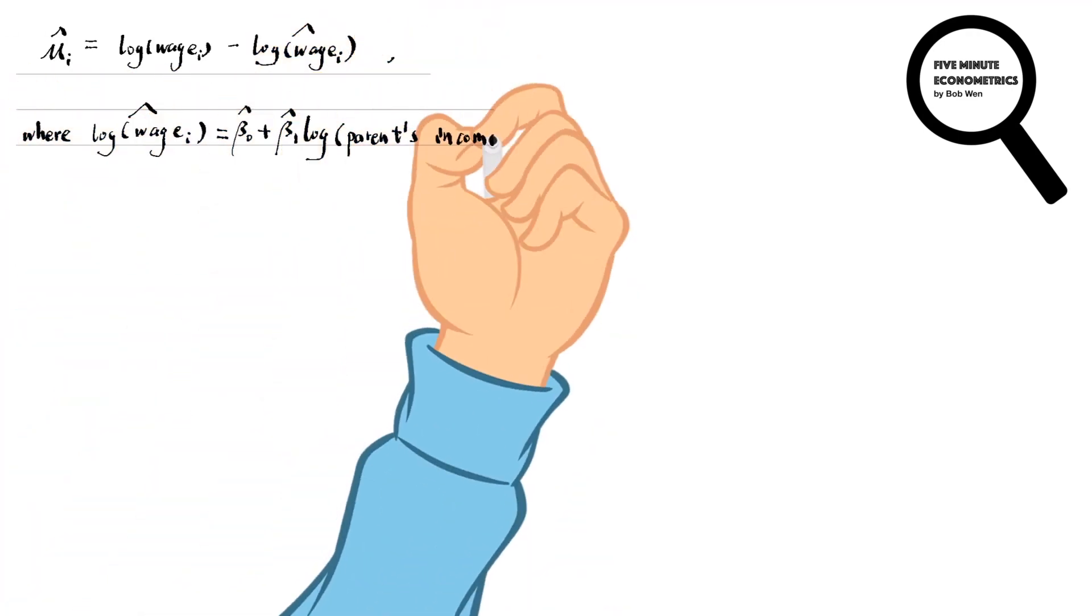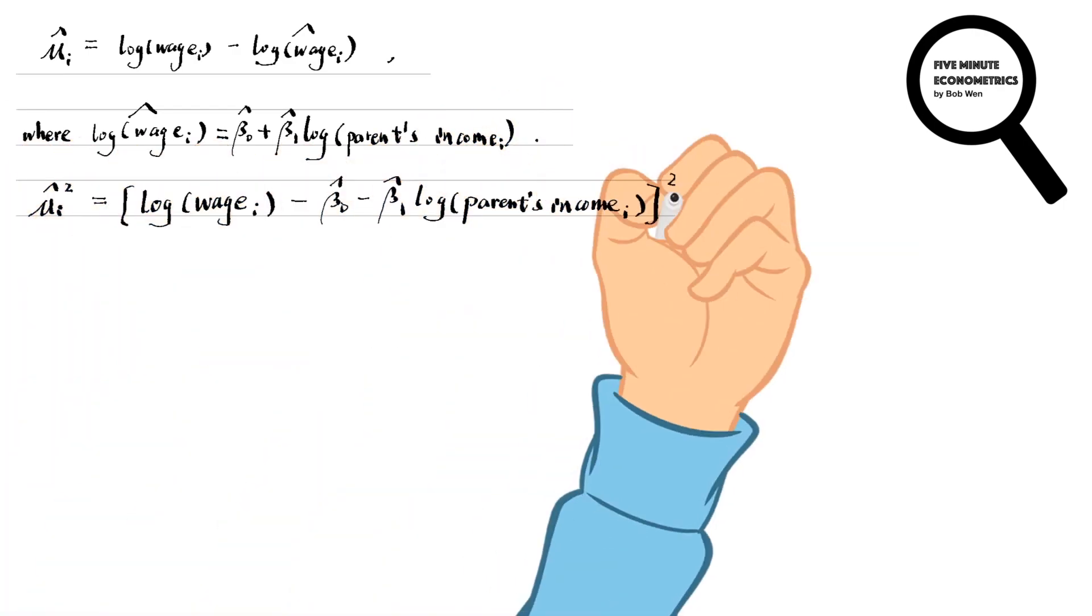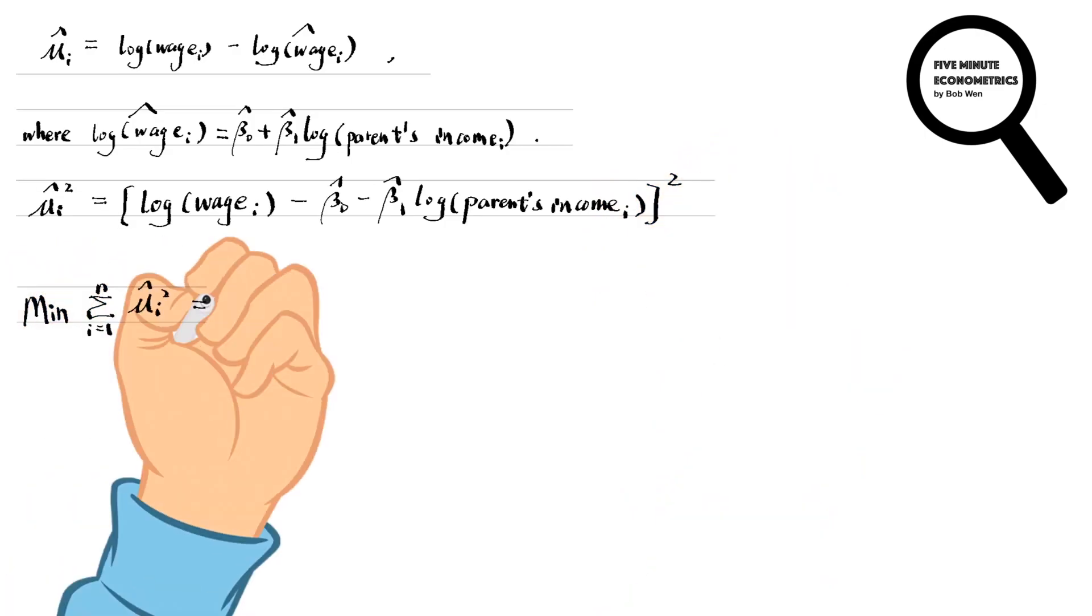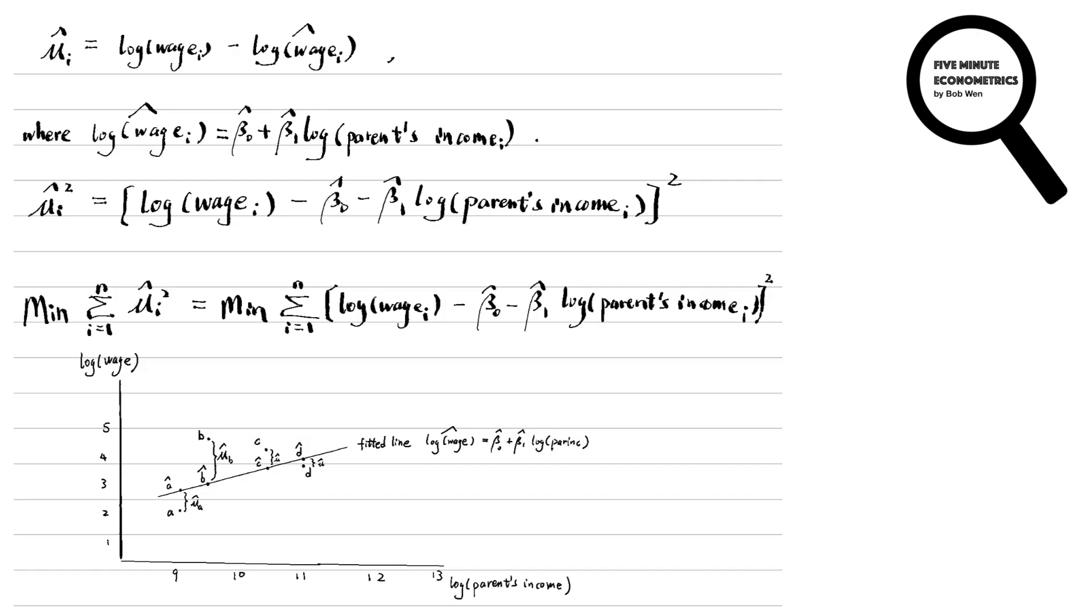The ordinary least squares OLS method of estimating the coefficients is to minimize the sum of the squared residuals. We can think of the idea as finding a straight line that makes the distance between the actual values and the fitted values as small as possible. Since some distances are negative, we square the residuals.